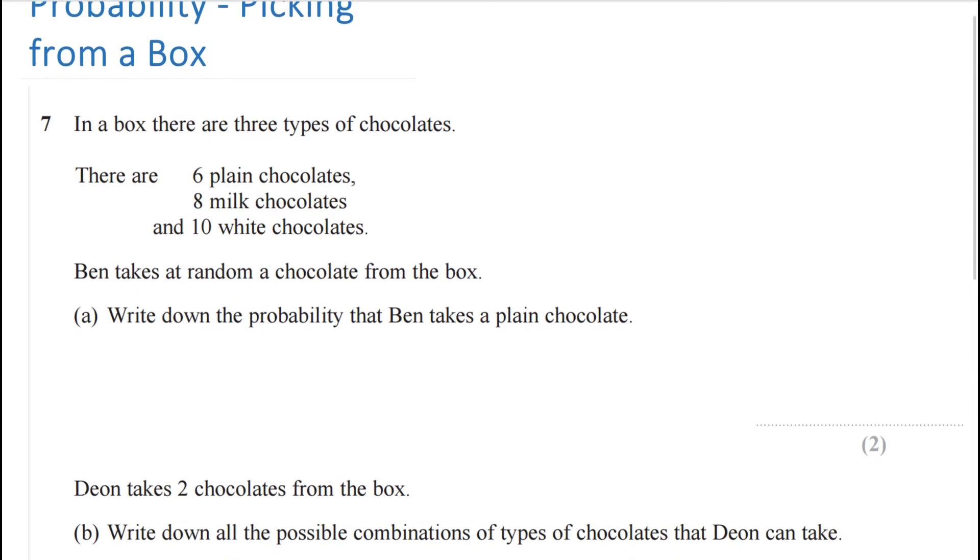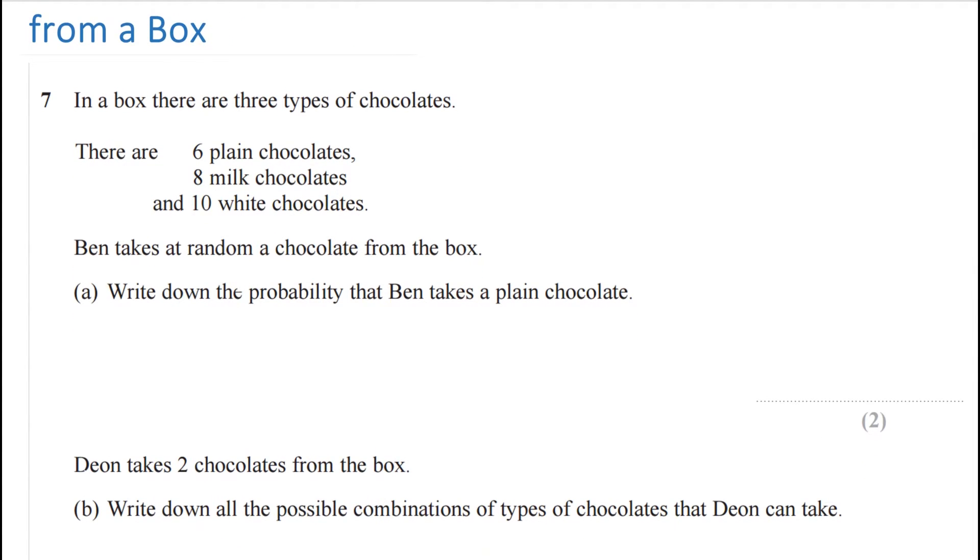In this question there's a box with three different types of chocolate: you've got six plain, eight milk, and ten white. This guy is going to pick one at random from the box. Write down the probability that Ben takes a plain chocolate.